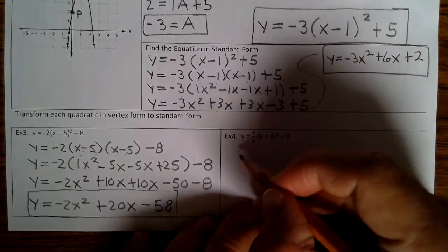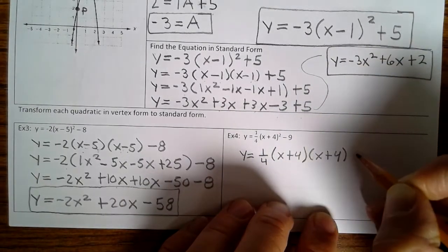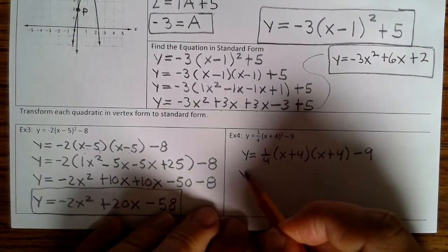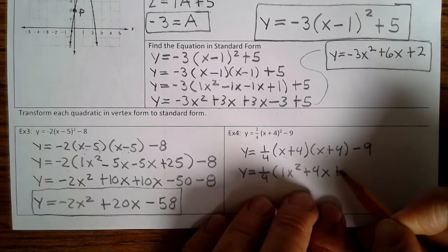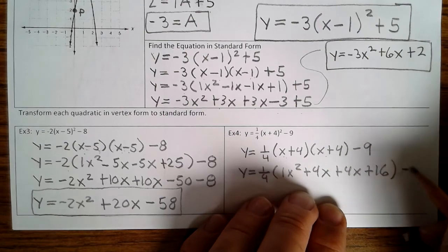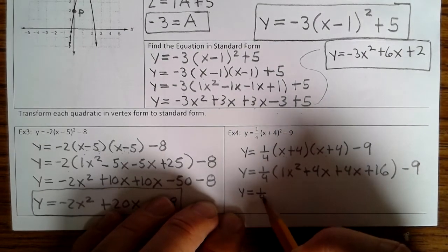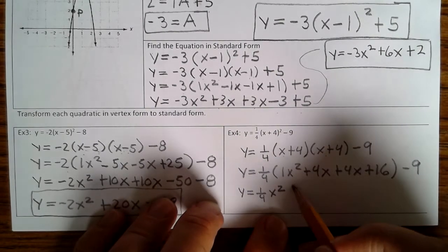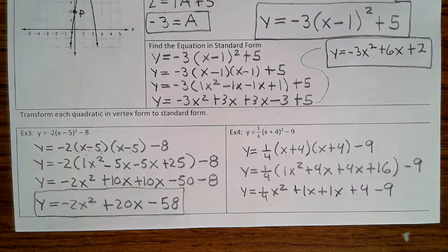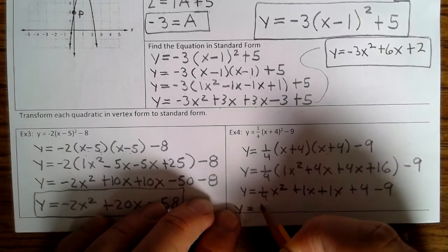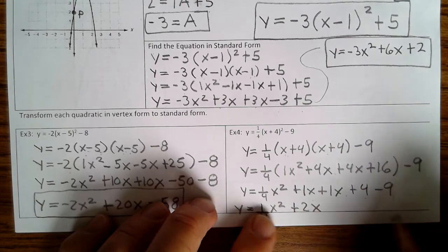Example 4: y equals one-fourth times (x plus 4) times (x plus 4) minus 9. FOIL the x plus 4 times x plus 4: y equals one-fourth times (1x squared plus 4x plus 4x plus 16) minus 9. Distribute the one-fourth: y equals one-fourth x squared, one-fourth times 4x is plus 1x, plus 1x, 16 times one-fourth is plus 4, and then minus 9. Combine terms: y equals one-fourth x squared, 1x plus 1x is plus 2x, and 4 minus 9 is minus 5.